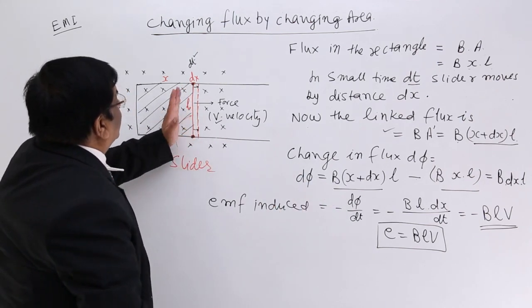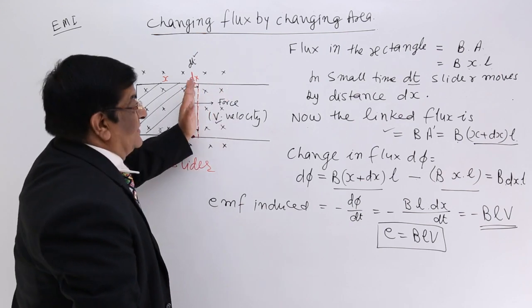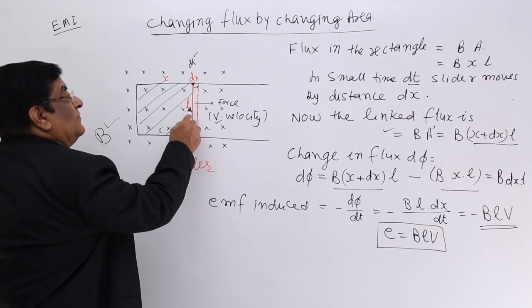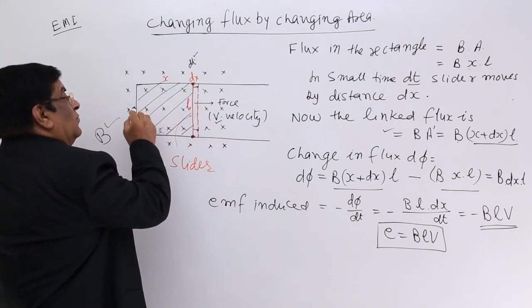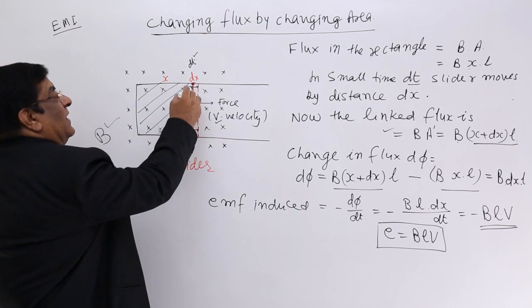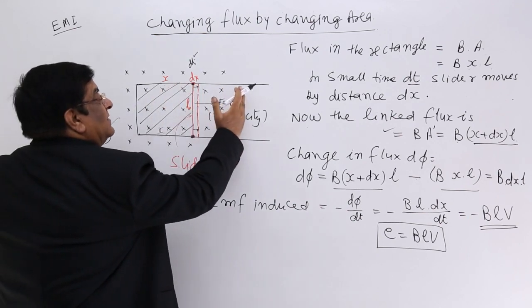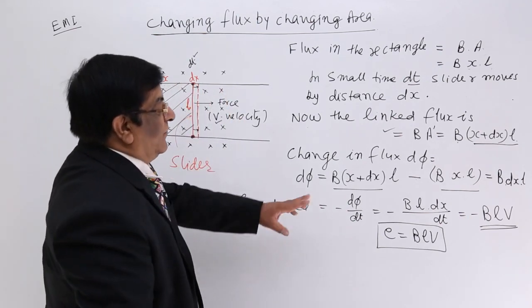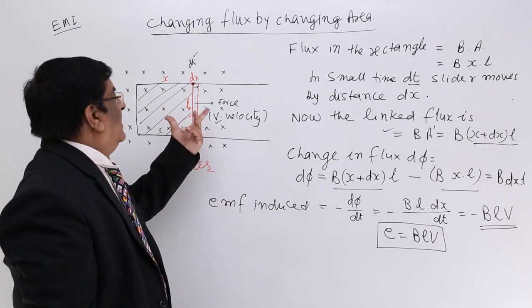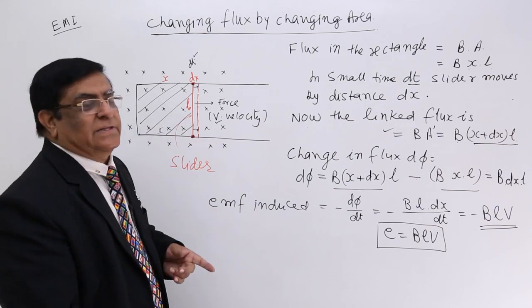What is L? Length. This is responsible for changing the area. So the one arm which is moving, these are not moving, so I have not taken this length, this length or this length. I have taken this length which is moving, so the formula is E equals BLV and here you see a very peculiar and compulsory thing.